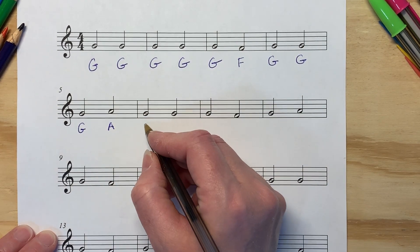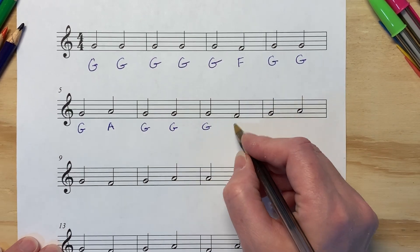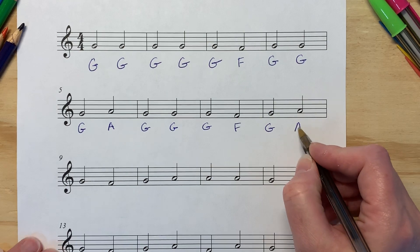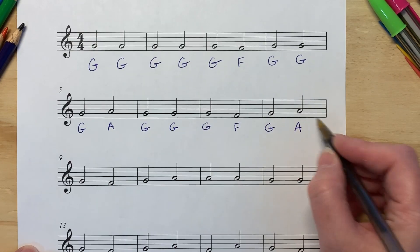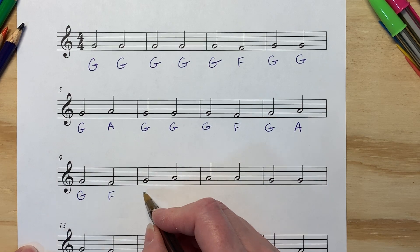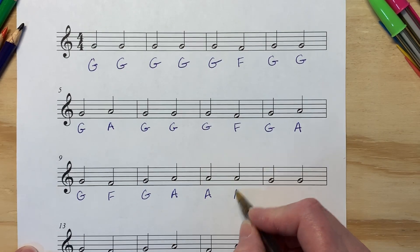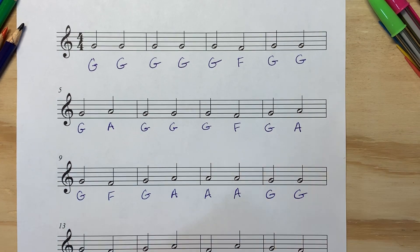It goes up to an A, down to a G, stays on G, stays on G, goes down to an F, goes up to G, up to A. Now from here, it goes down to a G, up to a G, up to a G, up to A, up to A, repeats, down to G, repeats. That repeats right here to a G.